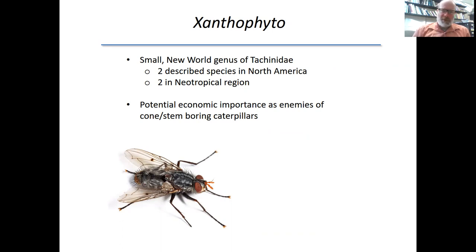In addition, I thought it might be a good place to start because Jim O'Hara had noticed there were clearly some new or undescribed species in the Southwest. This genus has potential economic importance because they're parasitoids of caterpillars that are stem borers or cone borers, often in conifers and conifer plantations.